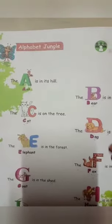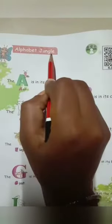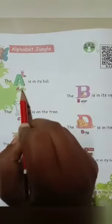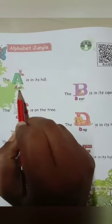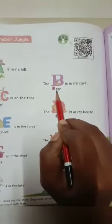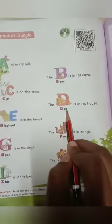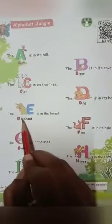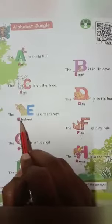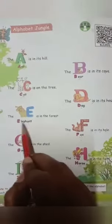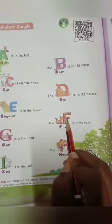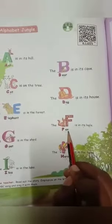One time repeat — Alphabet Jungle. A for ant — A, N, T — ant. B for bear — B, E, A, R — bear. C for cat — C, A, T — cat. D for dog — D, O, G — dog. E for elephant — E, L, E, P, H, A, N, T — elephant. F for fox — F, O, X — fox.